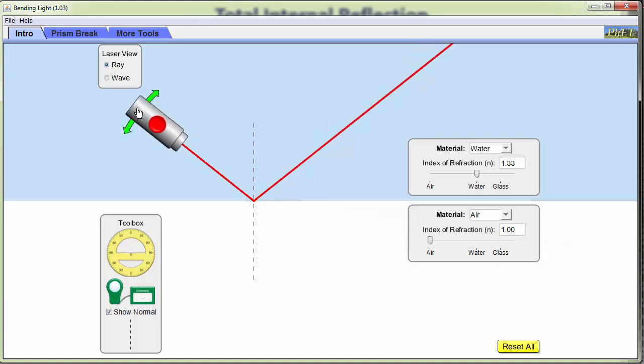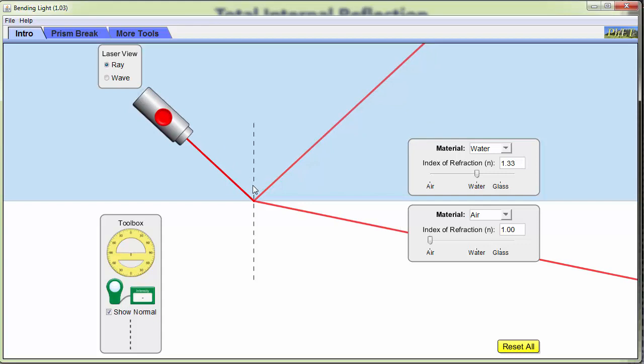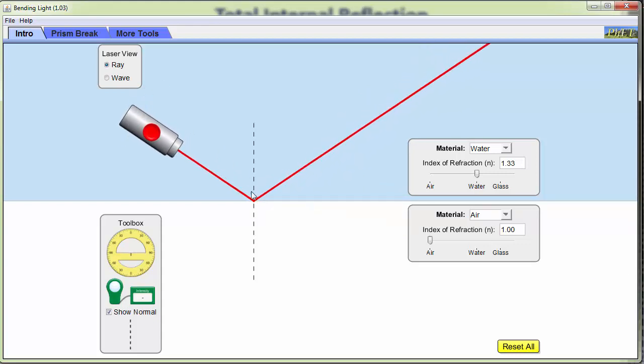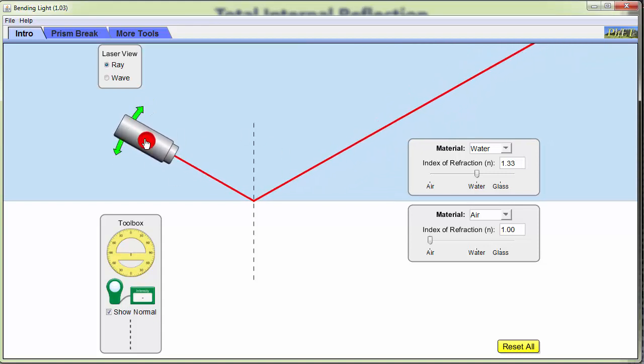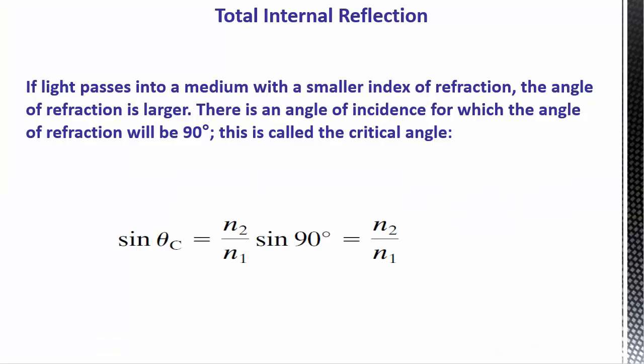there's a certain point where it goes all the way, oops, too far, where your transmitted ray is going parallel to the boundary. And if you go beyond that point, then there's no transmitted ray and all of it is reflected. And this is called total internal reflection. And it actually has some good applications, but let's look back at that equation.